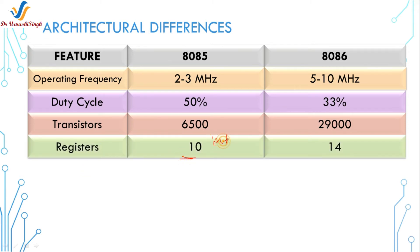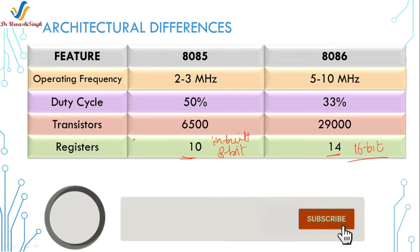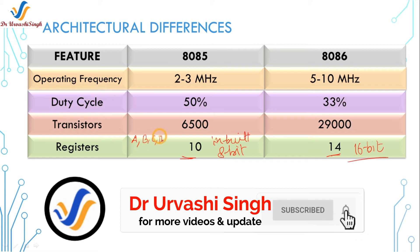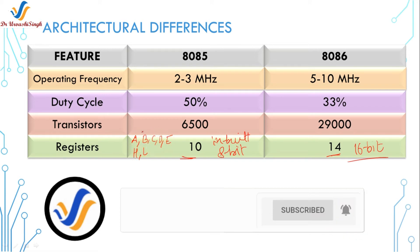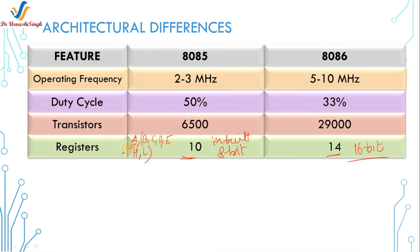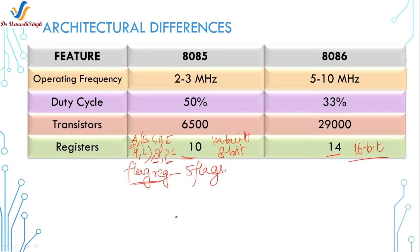The next feature is the number of registers. There are 10 inbuilt 8-bit registers in the 8085 microprocessor. These 10 registers are A, B, C, D, E, H, L — where A is the accumulator and the others are general purpose registers — along with the stack pointer (16-bit), program counter (16-bit), and the flag register (8-bit). Only 5 flags are defined for the 8085; the remaining 3 flip-flops are vacant for future use.